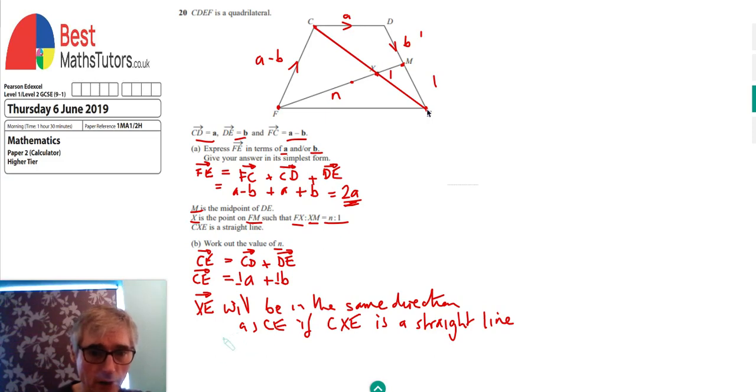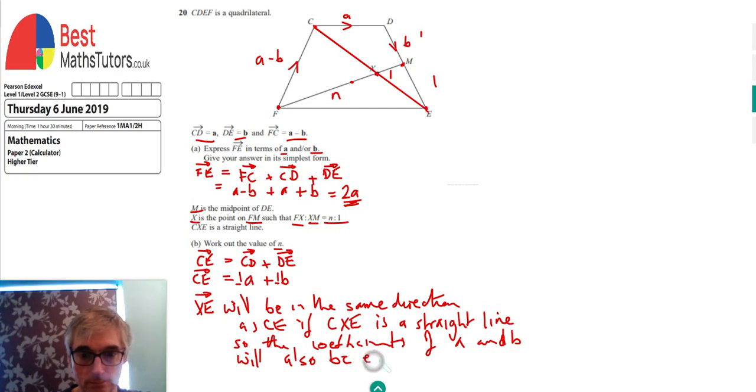XE will be in the same direction as CE if CXE is a straight line. That means the coefficients of A and B will also be equal.